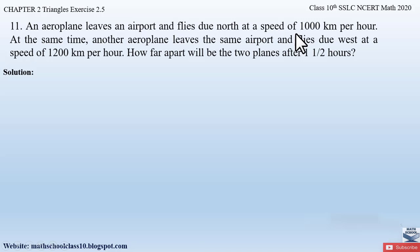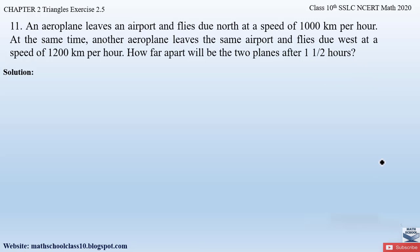First of all let us understand the question. They have given us the speed of the aeroplane, the distance covered, and the time taken. This question is related to distance, speed, and time. So you should know the formula: speed is equal to distance divided by time. You should also know the directions — north, south, west, and east. These are the two things you should know before we solve this question.